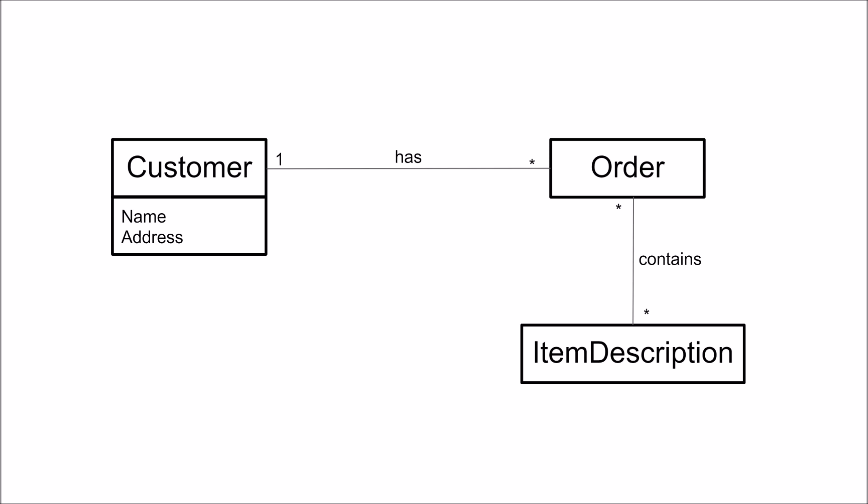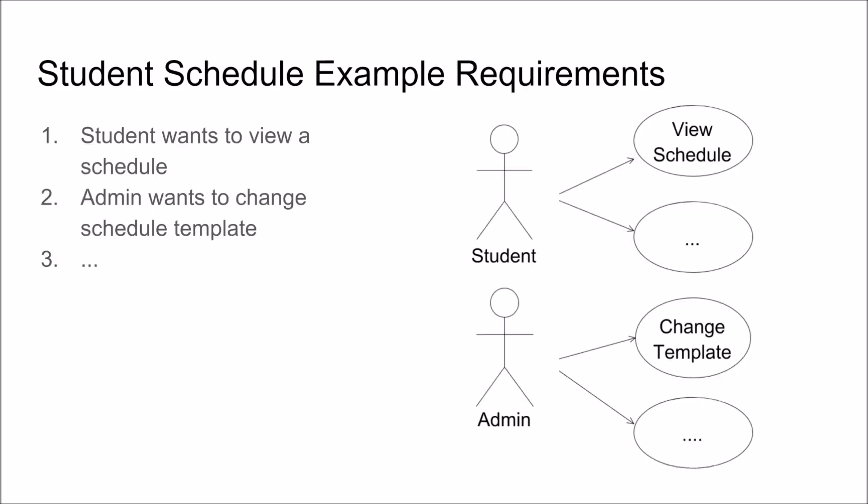The notation is actually not a big deal. The problem is of course how you create a domain model that is good. To do this we start with the requirements. We can imagine a student schedule system where students want to view schedules and an administrator wants to change the template for a schedule — what information is shown, maybe some layout and things like that. There are probably also other requirements.